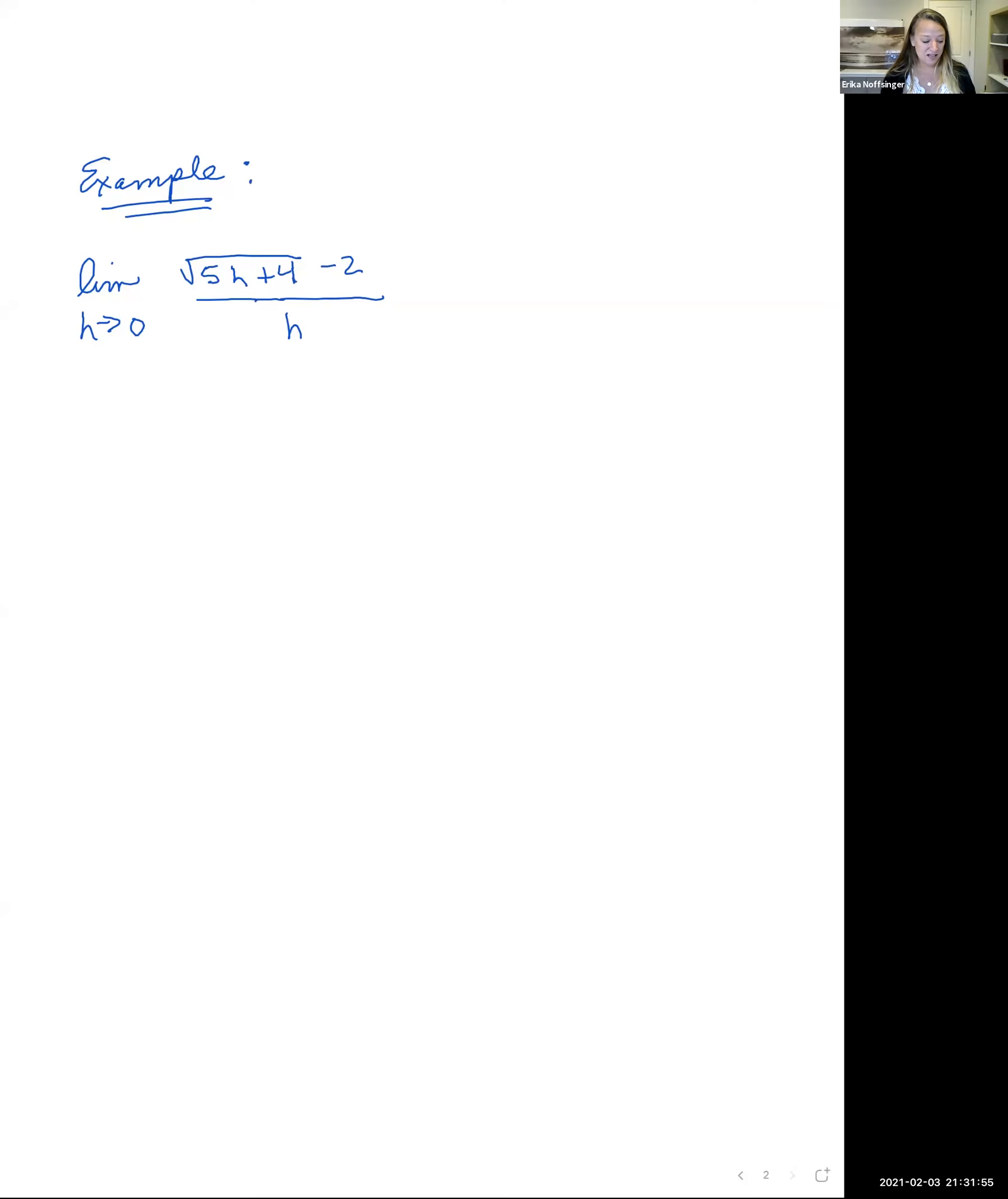Okay, so we're looking at an example with limits. The first thing we talked about was let's always do direct substitution. And so in here, wherever I see an h, because it's the limit as h approaches 0, I am going to plug in a 0.